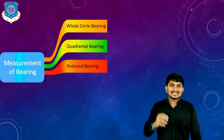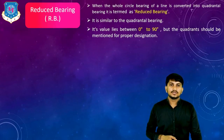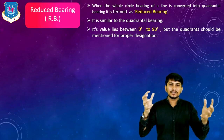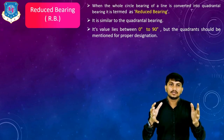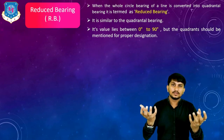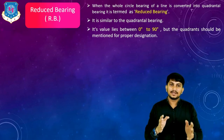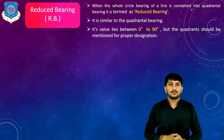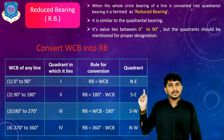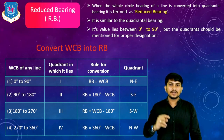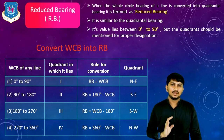Now let us discuss the last type of bearing, which is reduced bearing. When the whole circle bearing of the line is converted into the quadrantal bearing, it is termed as reduced bearing. Because the value of WCB is higher compared to QB, when we convert from WCB to QB the value reduces — hence it is called reduced bearing. Its value lies between 0 degree to 90 degree, but the quadrant must be mentioned for proper designation. We convert WCB into RB by referring to this table. If WCB is between 0 to 90 degree, line lies in the first quadrant and RB equals WCB.